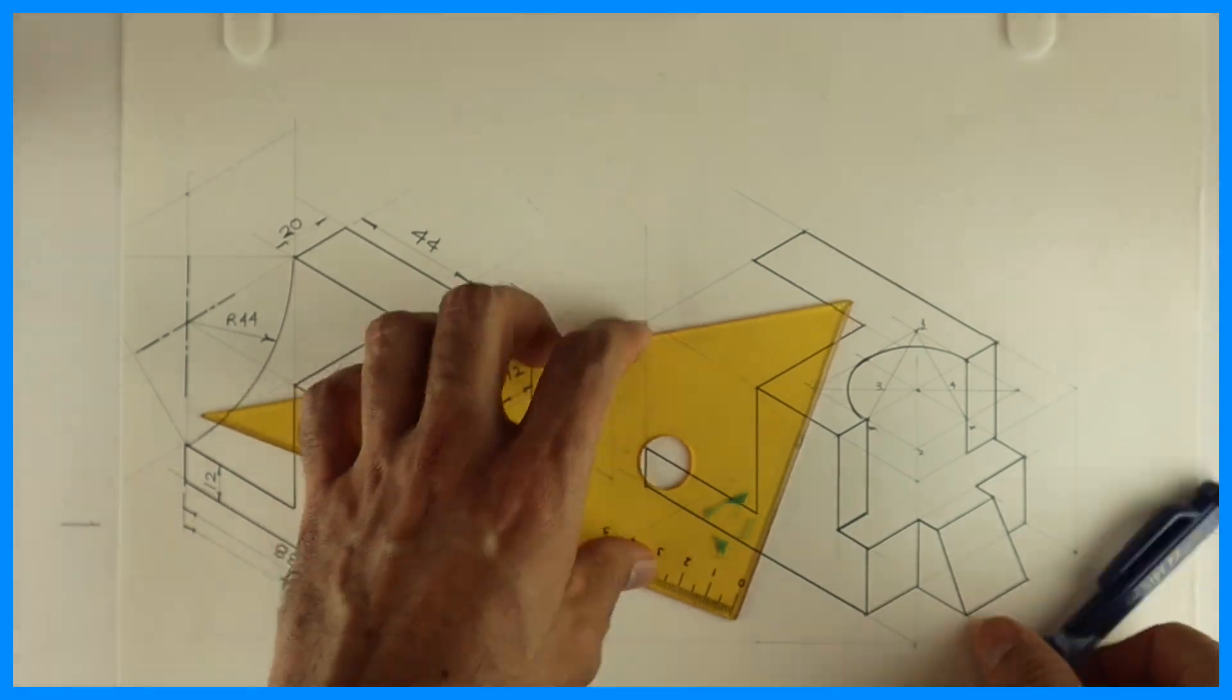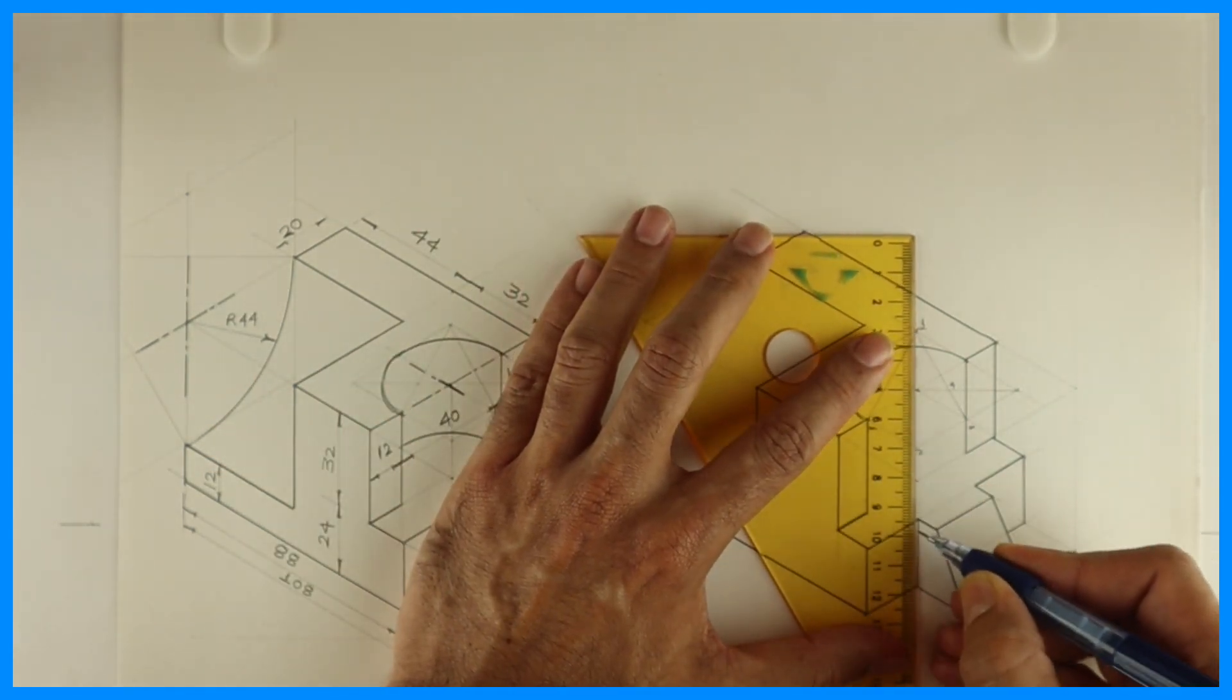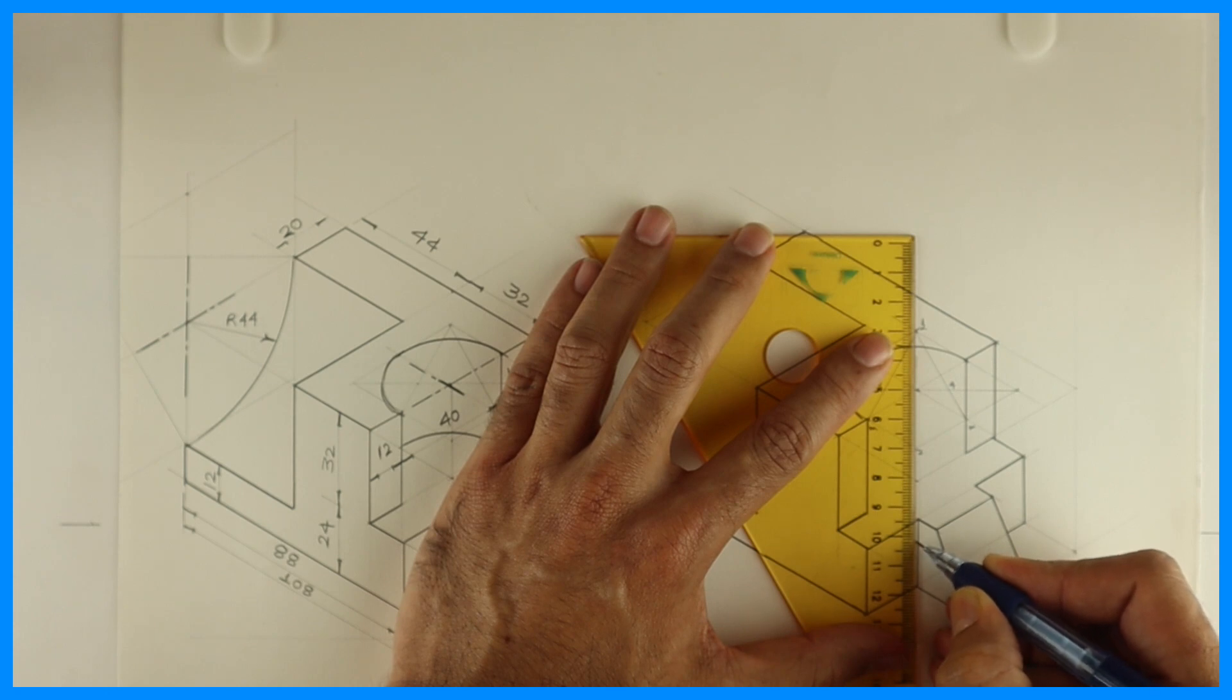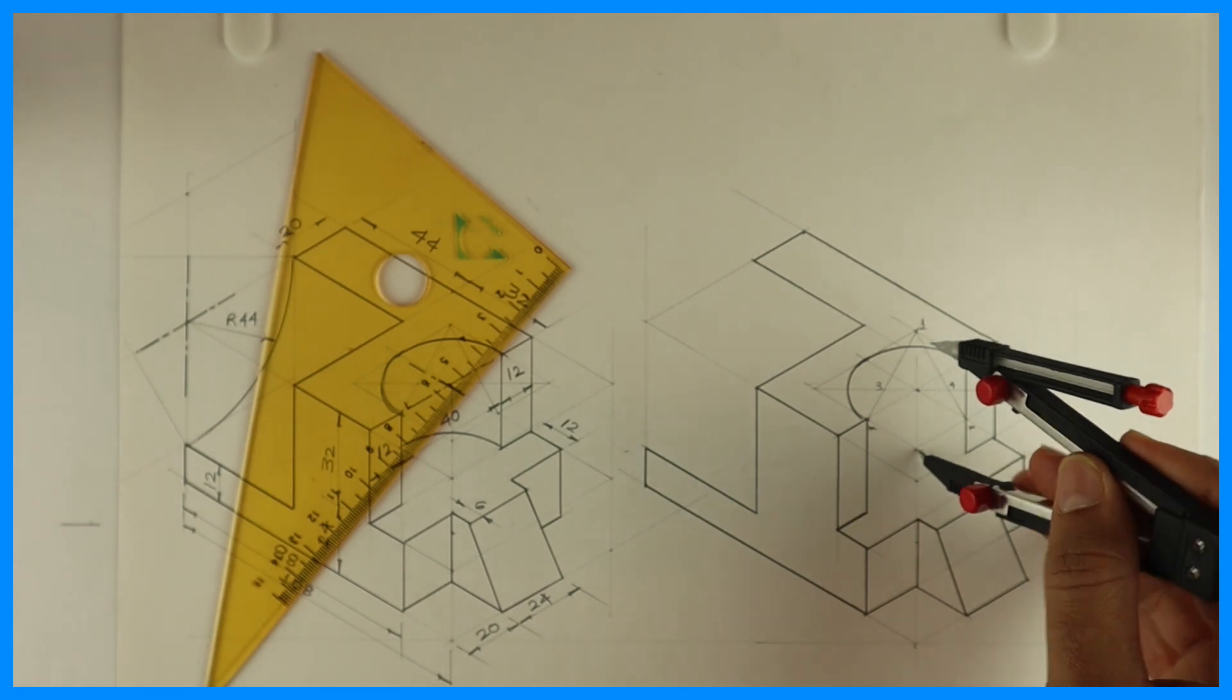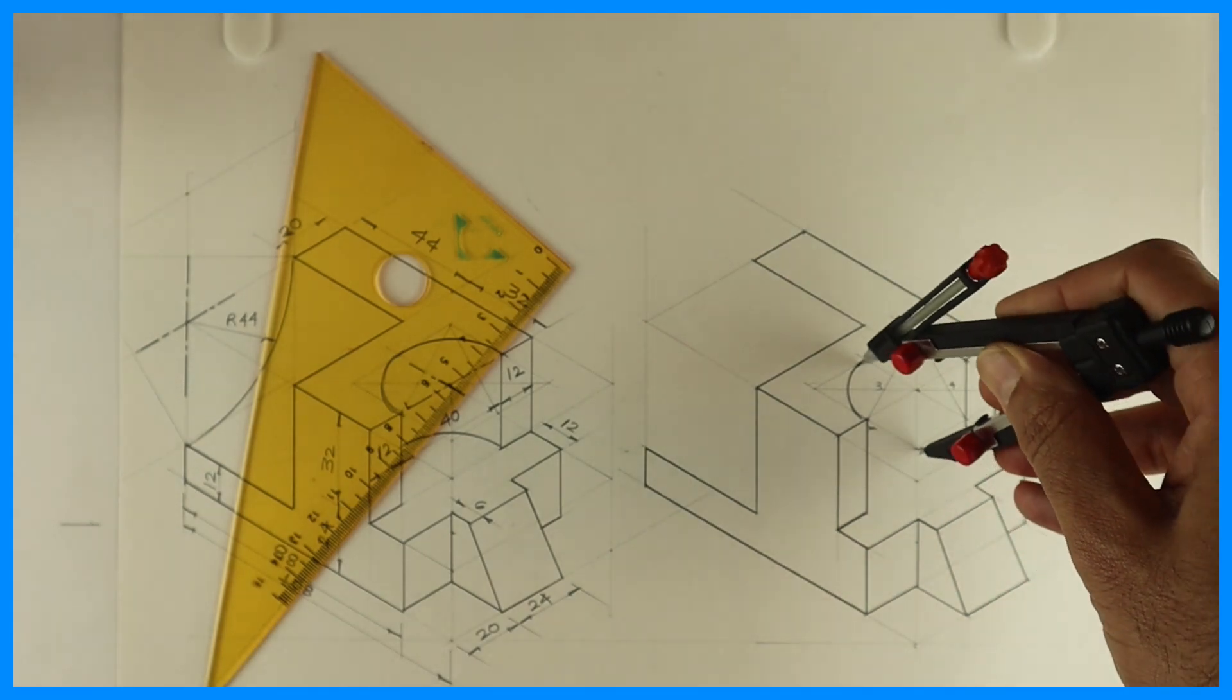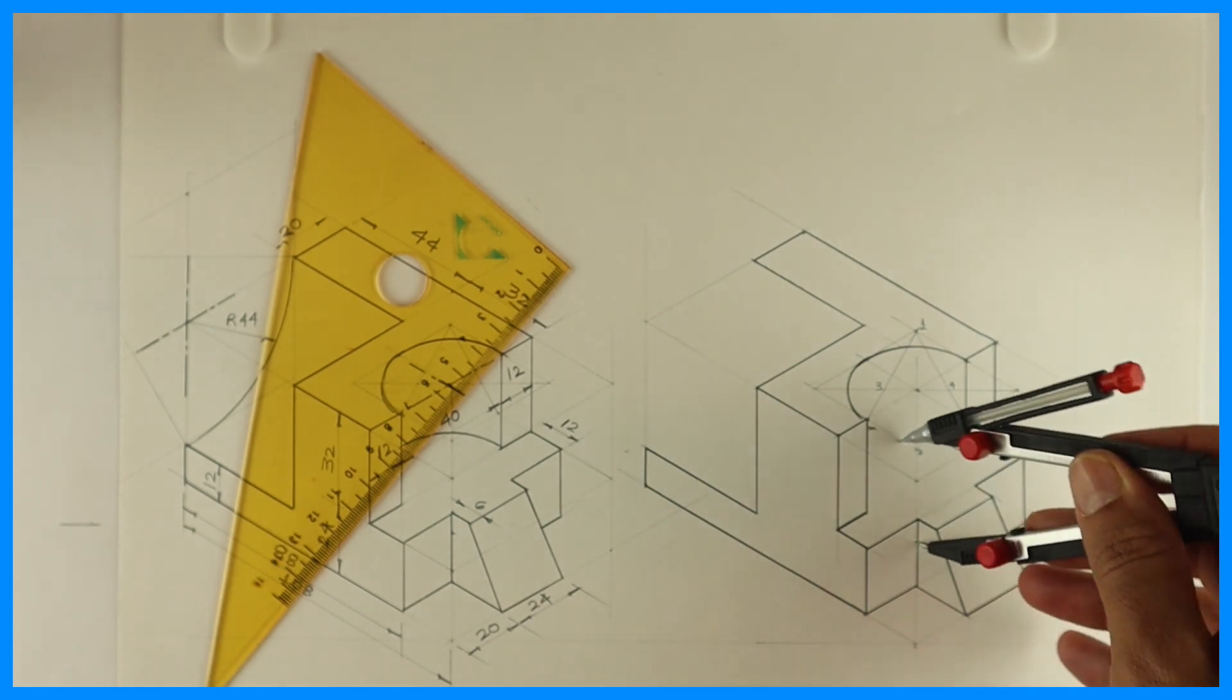Now we need to draw the lower part. How much do you go down? 32. So from 2, you go down by 32. See this. Take this radius, go down by 32 and draw arc.